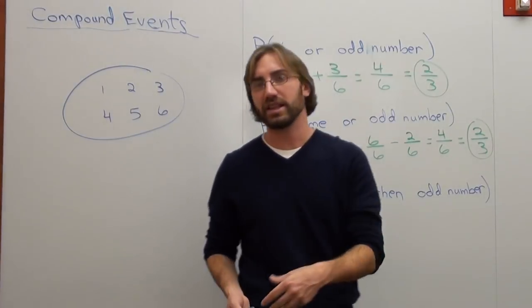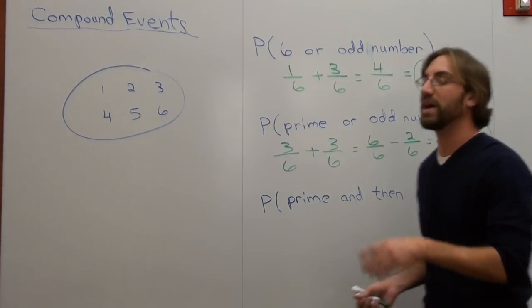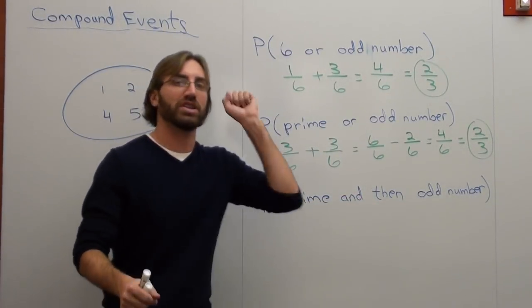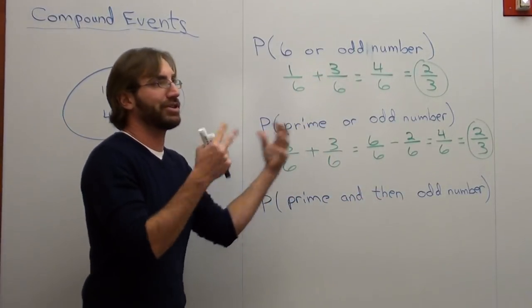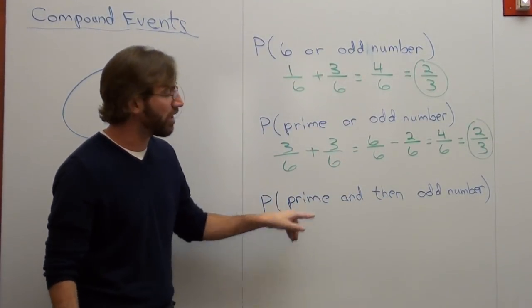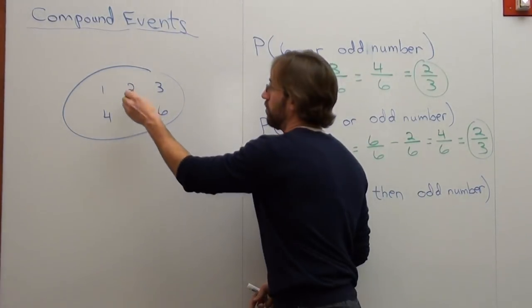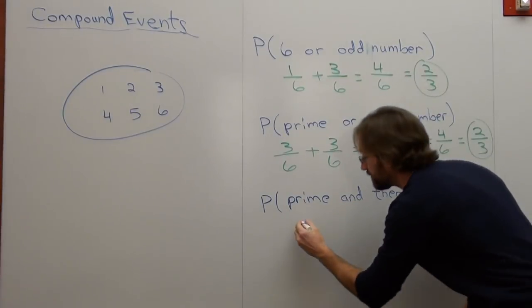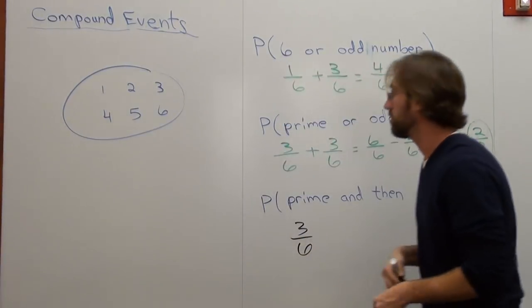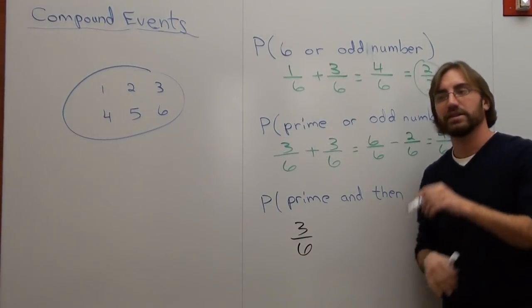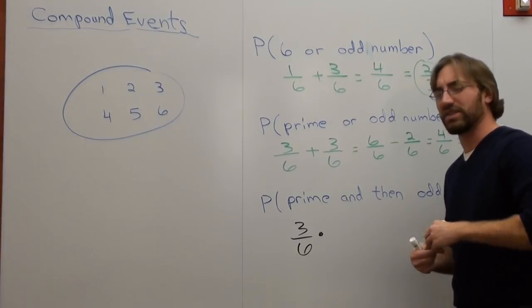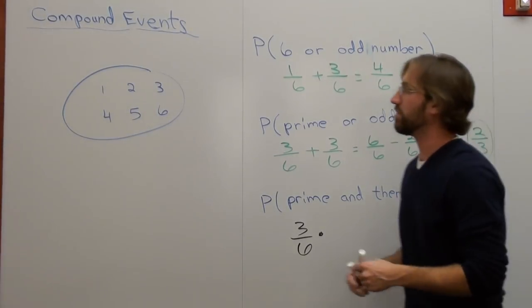Next one is what's the probability or the likelihood of a prime number and then odd number. So basically what that means is I'm going to roll the dice. Yay! And then I'm going to roll the dice again. With an or problem, we're just saying, well, it could be this or this. An and then problem means, well, I've got to do this and then I've got to do it again. So what's the probability or likelihood of rolling a prime number? Well, let's find out. 3 over 6. There's a likelihood of 3 out of 6 that it's prime. Okay. And then does not mean add. It means multiply.